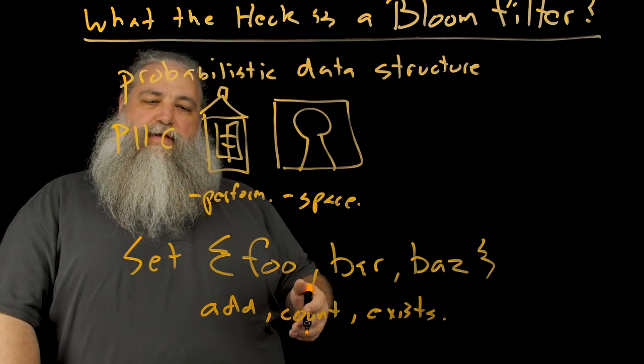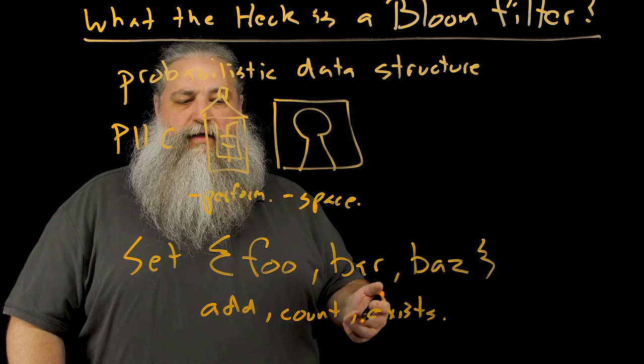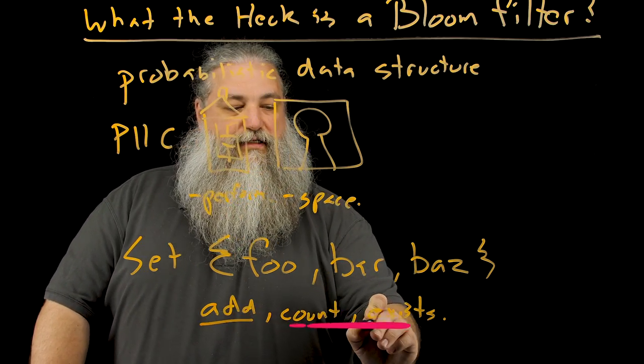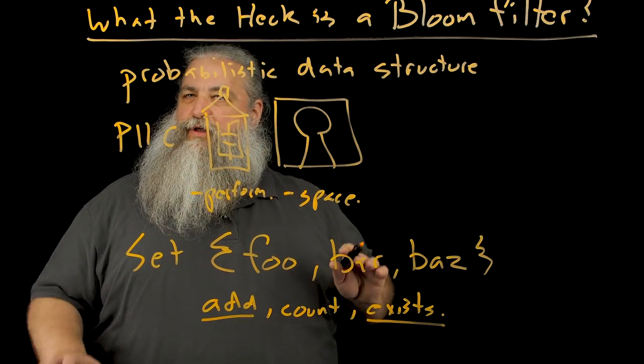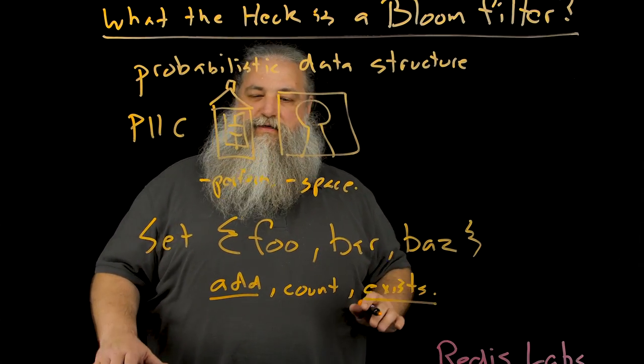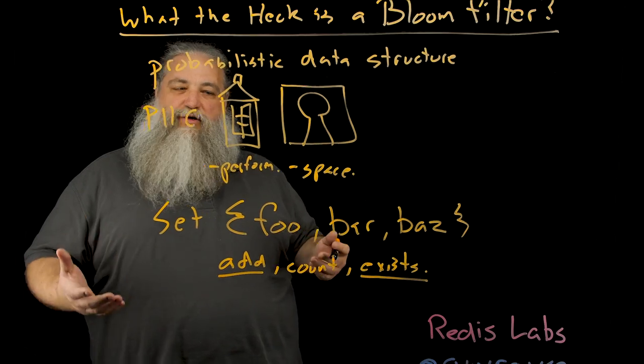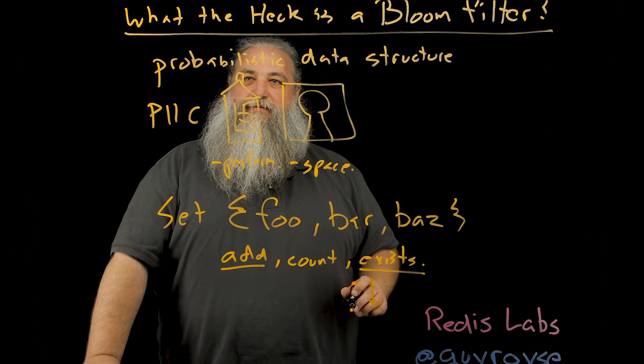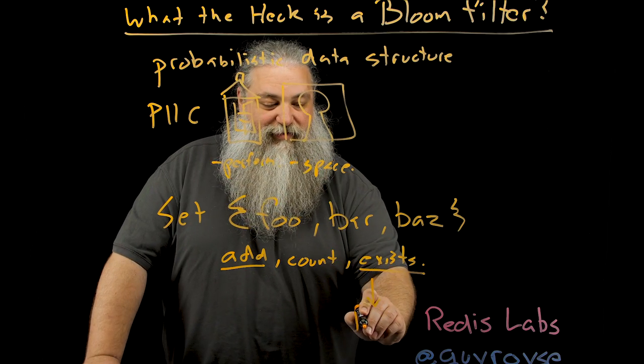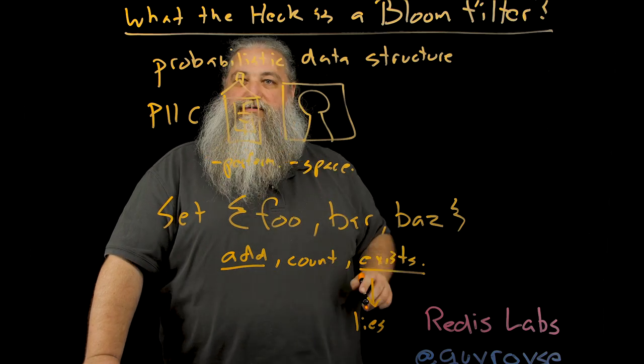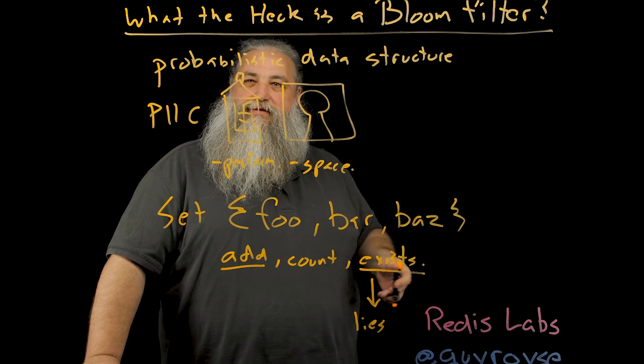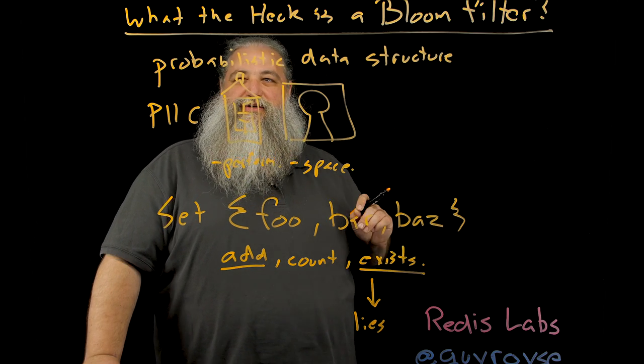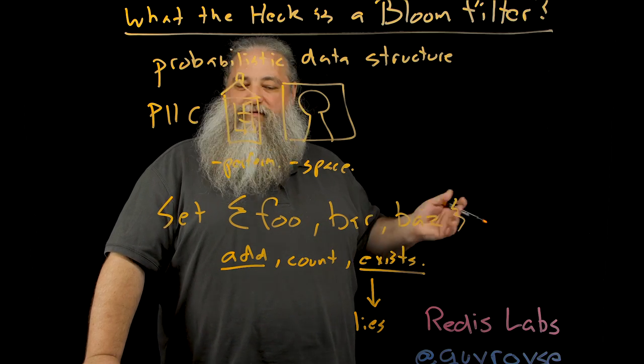A bloom filter is like a regular set except you can only do addition. You can only add things to it and you can check for existence. And those are the only operations you can do against it. And it's probabilistic. It has some uncertainty in it. And that comes from the fact that when you ask if it exists or not, sometimes it lies. Now it doesn't lie very often. And it lies rarely enough that you can use it for useful things. Much like a JPEG doesn't always give you the perfect rendition of the image, but it's good enough for what you need it for.